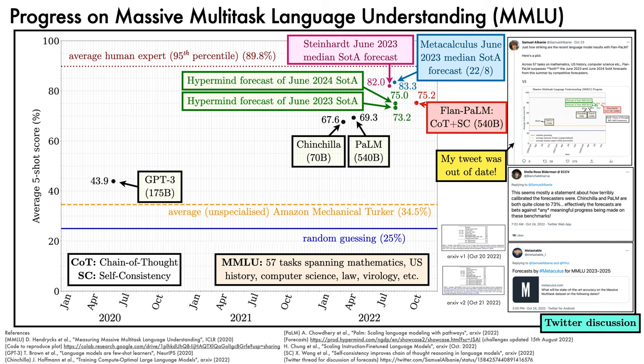I've added a note to the Twitter thread to reflect this. Thanks to the various individuals on Twitter for engaging in the discussion and helping to clarify the record. Comments about my stale tweet aside, the results are still very impressive in my opinion. A gain of almost six percentage points over the prior best model on the MMLU benchmark is substantial. Since I think it's useful to dig deeper, we'll talk a little more about the HyperMind forecasts themselves next.